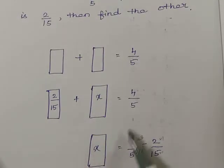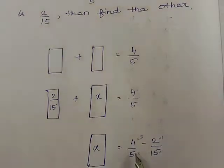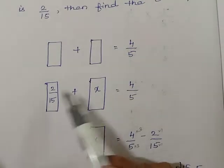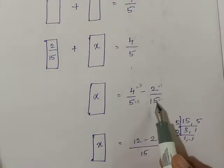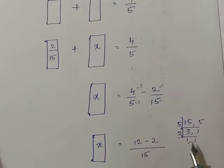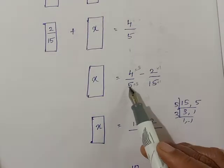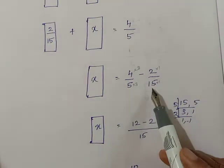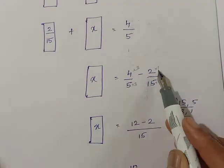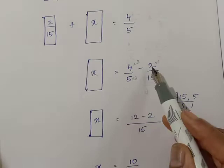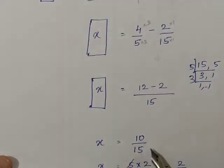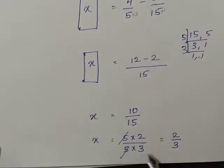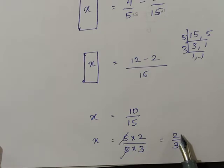So x equals 4 by 5. When 2 by 15 is taken to the other side it becomes minus 2 by 15. To solve these two fractions the denominators are different, so we will find the LCM, which is 15. 5 becomes 15 by multiplying by 3, and 15 stays as 15. So 4 threes are 12, minus 2 ones are 2. 12 minus 2 is 10, giving 10 by 15. Simplifying, 5 divides both: your answer is 2 by 3.